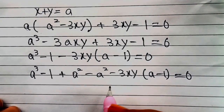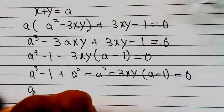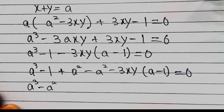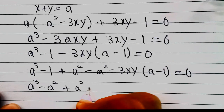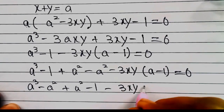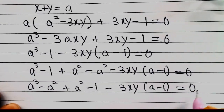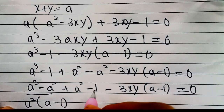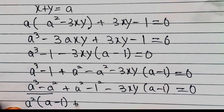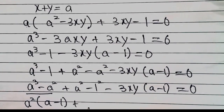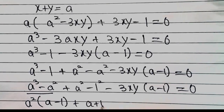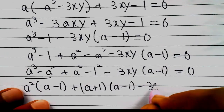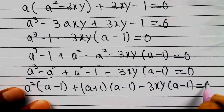We rearrange as a²(a - 1) + (a² - 1) - 3xy(a - 1) = 0. Since a² - 1 = (a + 1)(a - 1), this becomes a²(a - 1) + (a + 1)(a - 1) - 3xy(a - 1) = 0.